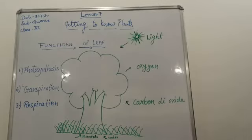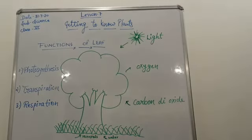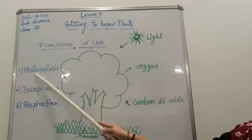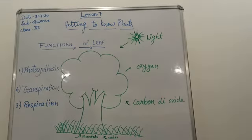As we know, the leaf performs various functions like photosynthesis, transpiration, and respiration. First of all, we will discuss the process of photosynthesis. Due to the green color of the leaf and presence of chlorophyll pigment, the leaf performs the most important and unique process of photosynthesis.